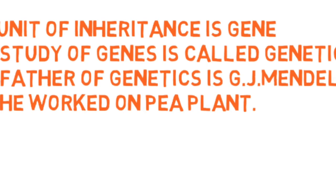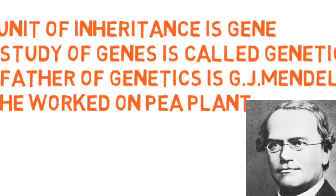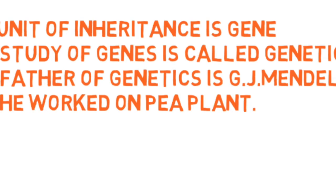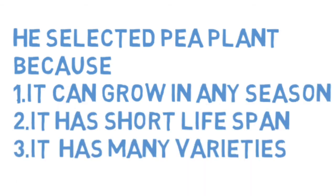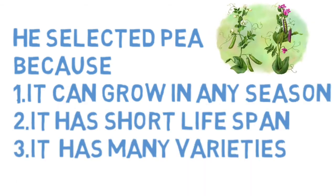The father of Genetics is Gregor Johann Mendel. Mendel was a Christian monk and church father, extensively interested in botanical teachings. He worked on the pea plant. The scientific name of the pea plant is Pisum sativum. He selected the pea plant because it can grow in any season and also has a very short lifespan.